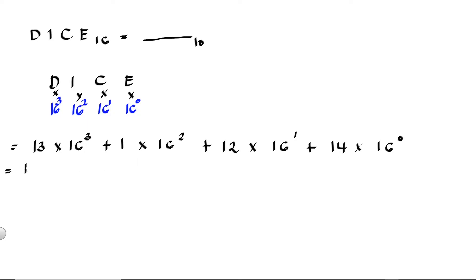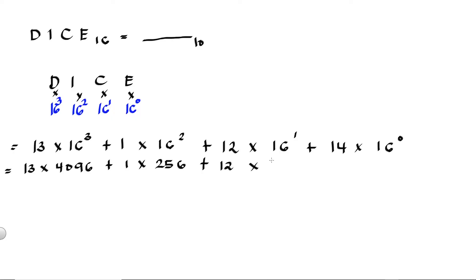Then we have 13 times 16 raised to 2 is equal to 3,328. Plus 1 multiplied by 16 raised to 1, or 16 times 1, is equal to 16. Plus 14 multiplied by 16 raised to 0, or 14 times 1.